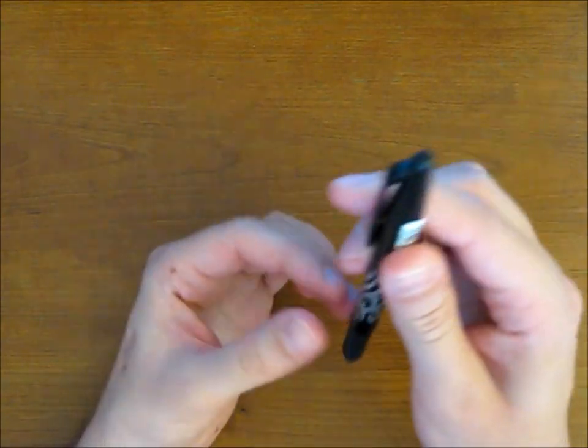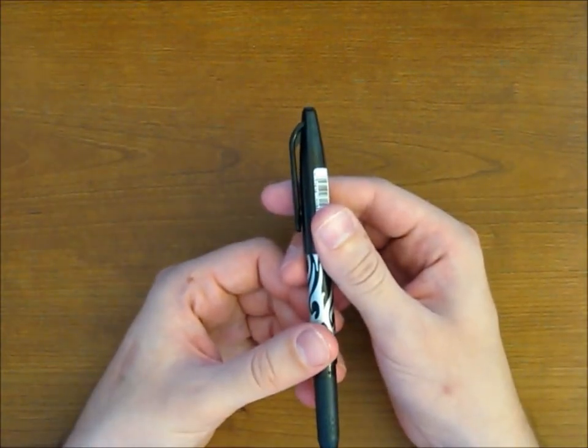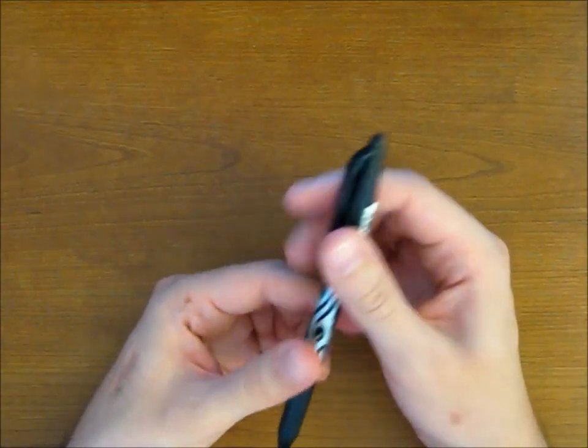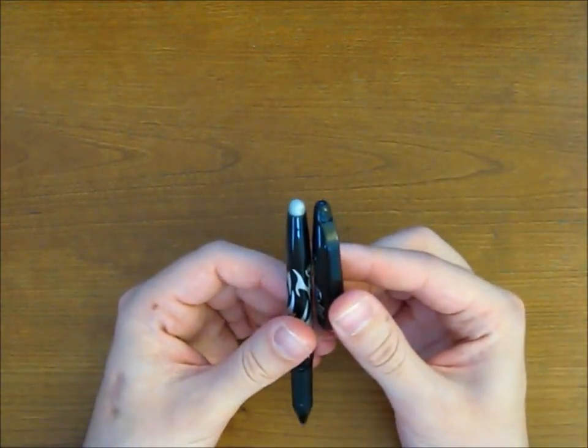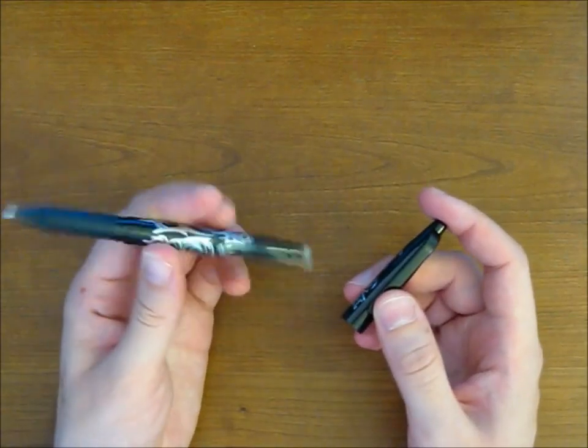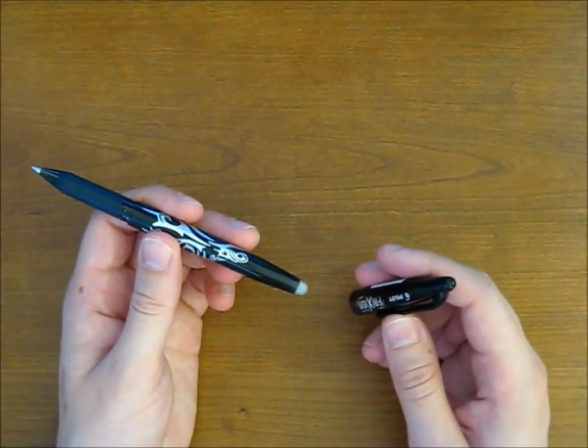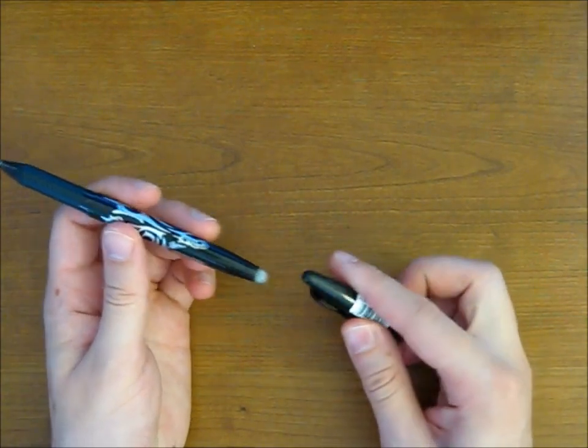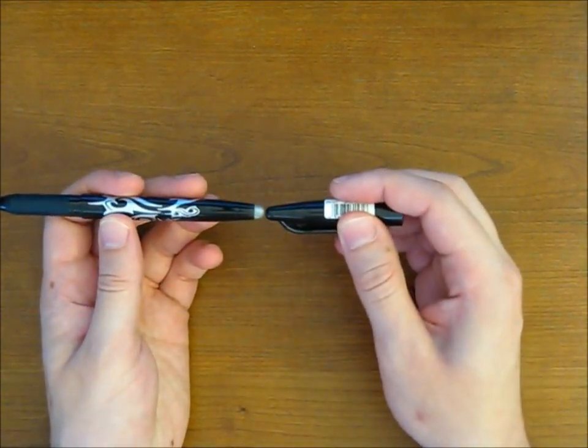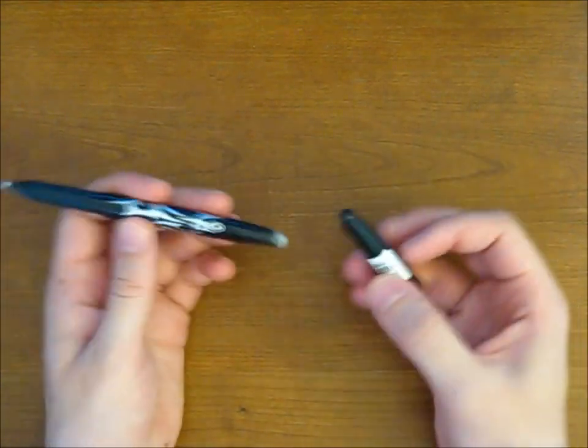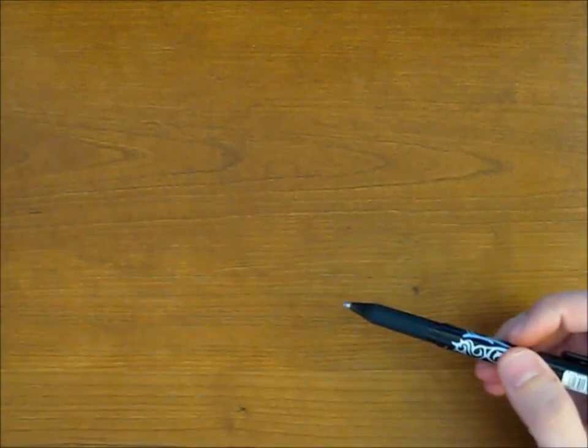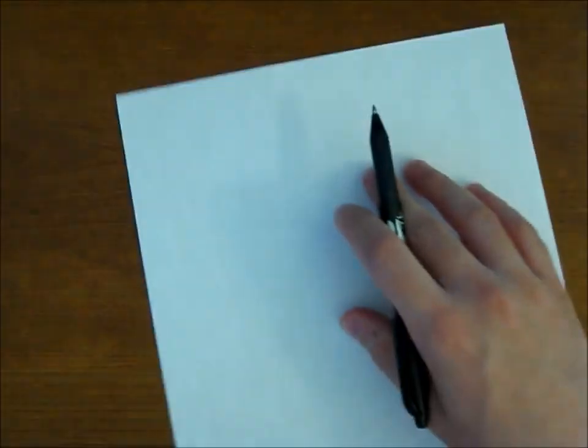Especially because the shape of the cap would pretty much perfectly fit that little eraser there. So, if you want to erase, you actually have to take the cap off. Not a big deal, but a little bit of an annoyance and somewhat pointless given that this nub could have very easily gone right there. But, nothing we can do about that. So, let's see how it writes.